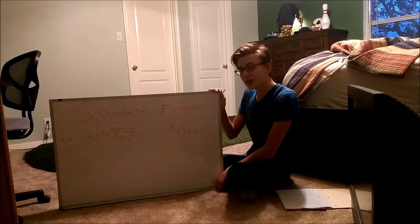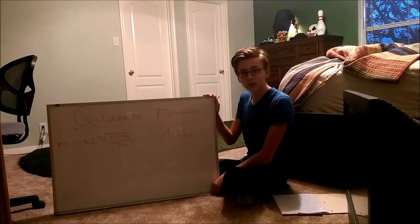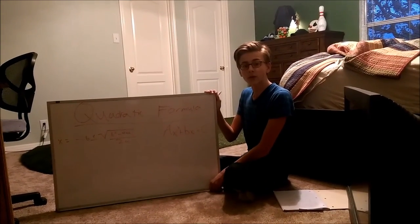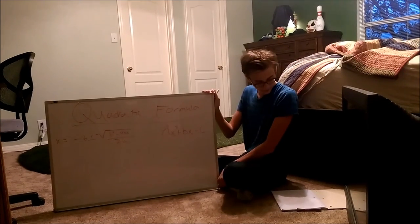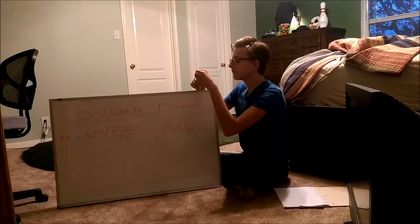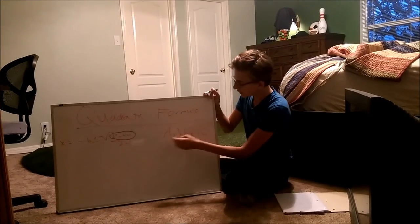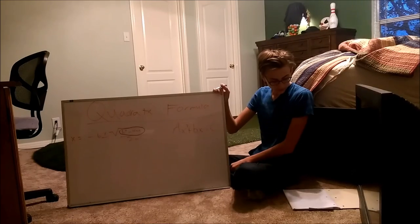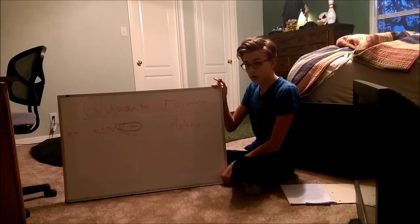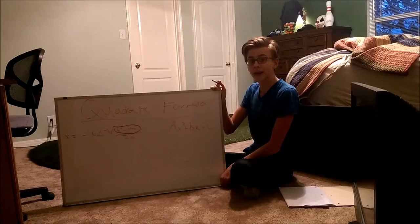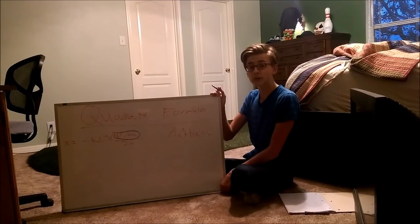Next, we'll be talking about the quadratic formula. The quadratic formula is x equals negative b plus or minus the square root of b squared minus 4ac, divided by 2a. This is very helpful for finding the solutions of a quadratic equation. It can also be used to find if there is one solution, two solutions, or zero solutions using the discriminant — b squared minus 4ac. If it is greater than zero, there will be two solutions. If it equals zero, there will be one solution, meaning the vertex is on the x-axis. If it is less than zero, there will be no solutions and the parabola will not touch the x-axis.